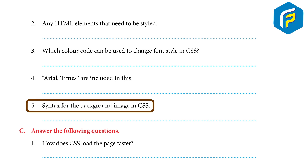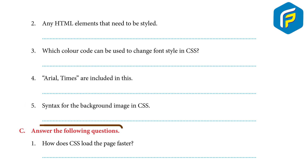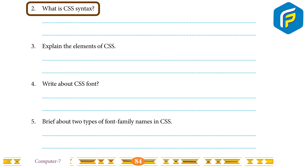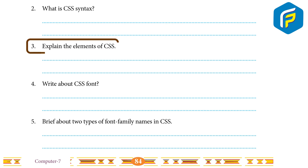5. Syntax for the background image in CSS — answer: background-image: URL(image name). Answer the following questions: 1. How does CSS load the page faster? Answer: as CSS style sheet code needs to be written once, it means the actual code a browser has to work on is less; the page will download more quickly if there is less code. 2. What is CSS syntax? Answer: like all other languages, CSS has a syntax of its own; it is a set of guidelines used when writing code — example: h1 { color: yellow; font-size: 11px; }.